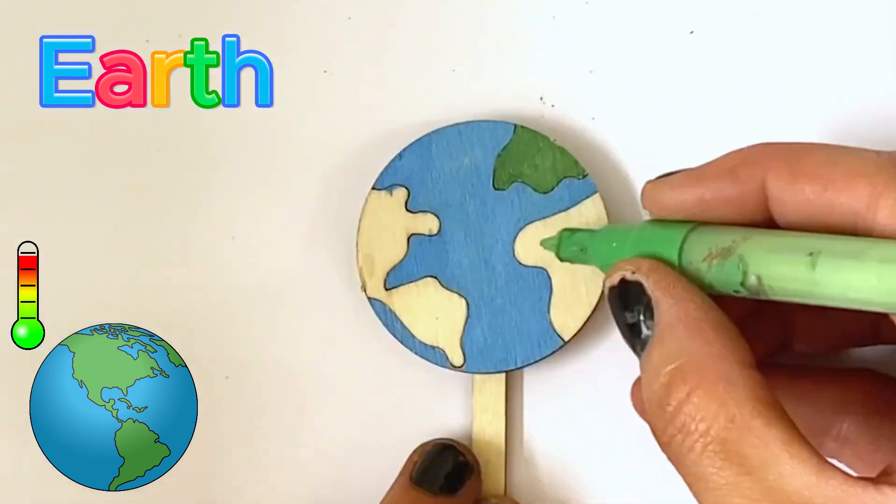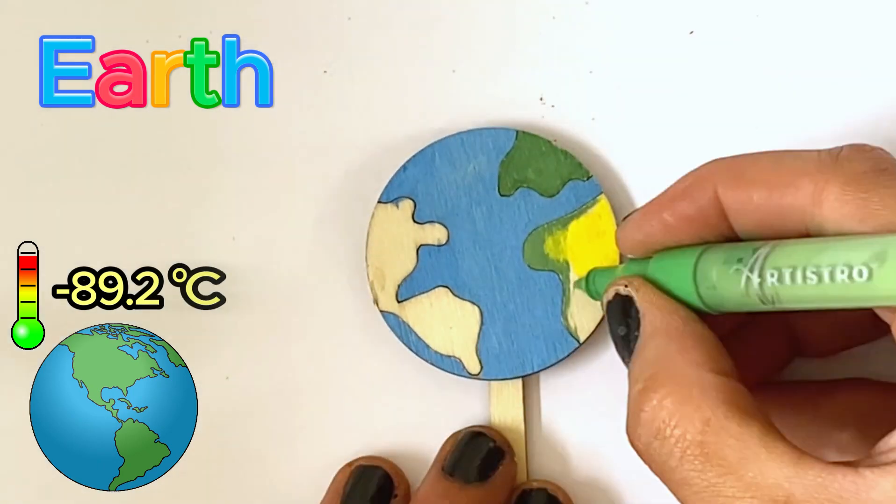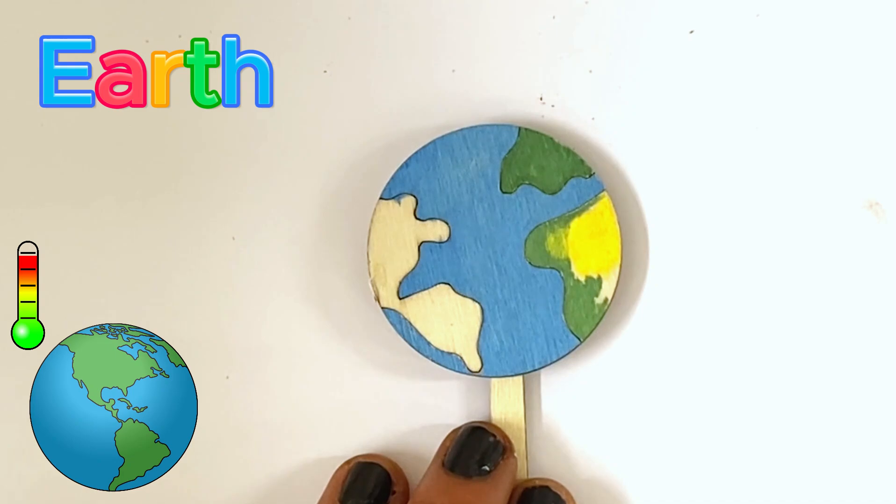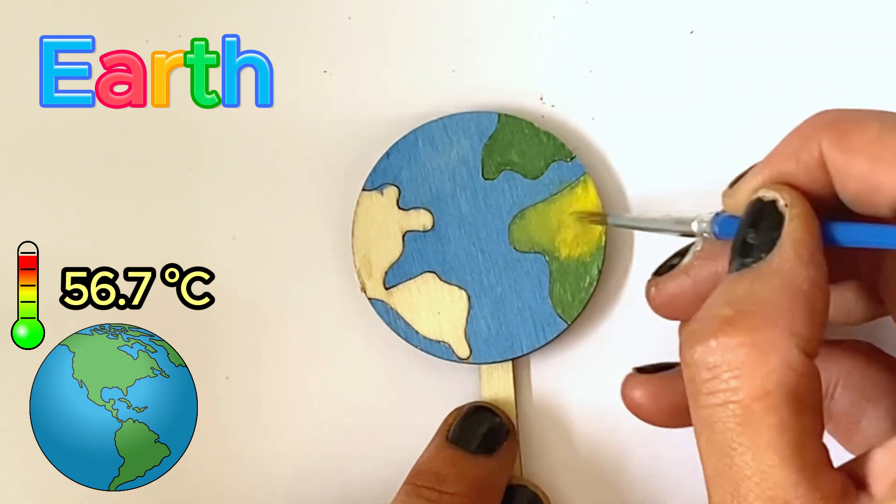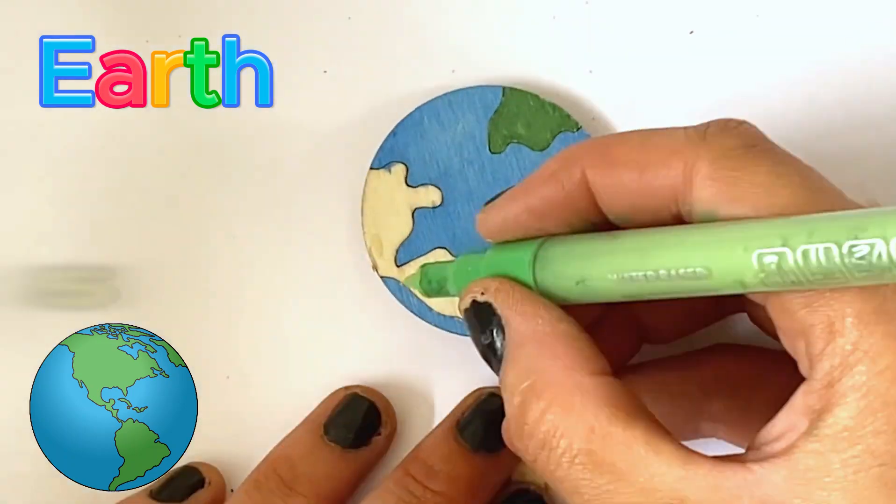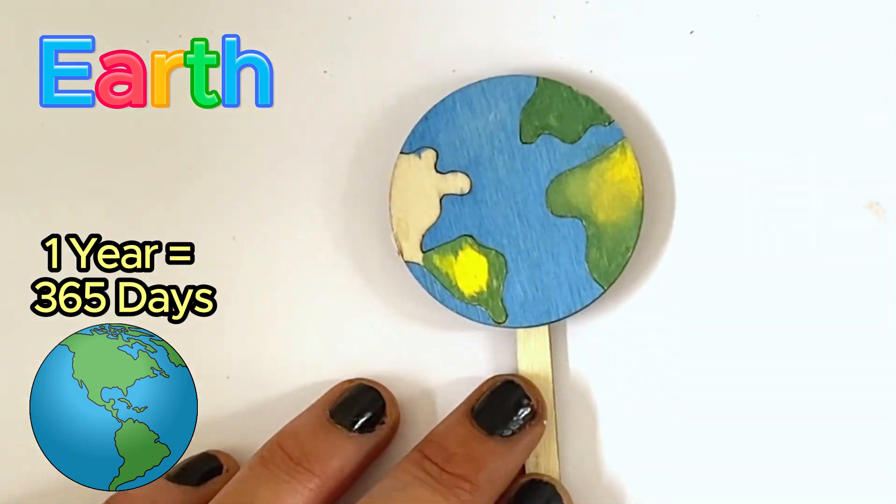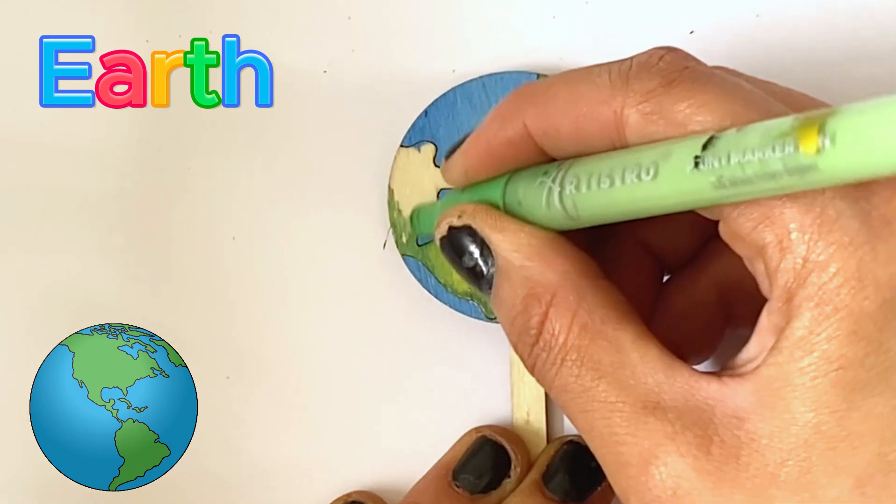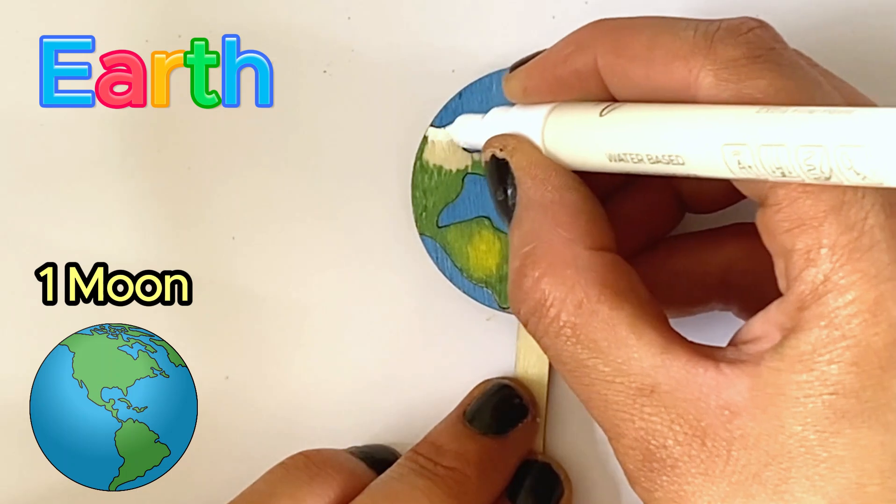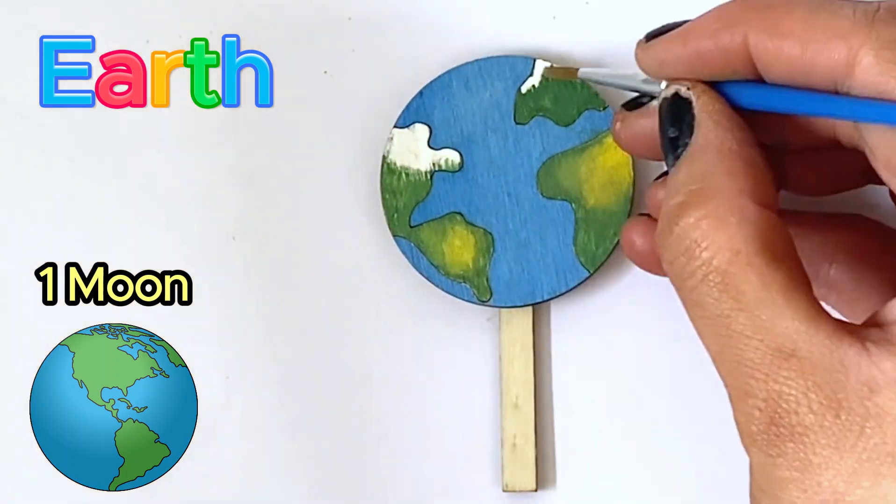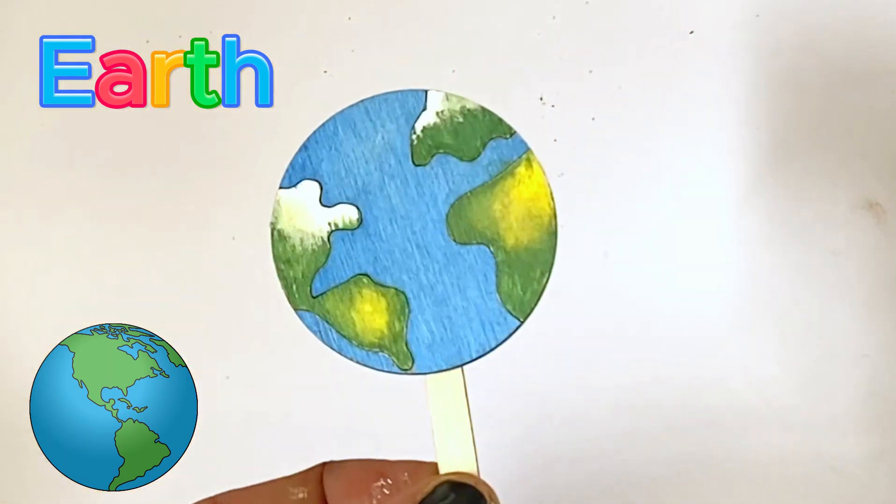However, the coldest temperature ever recorded on Earth was minus 89.2 Celsius in Antarctica. And the hottest recorded temperature was 56.7 Celsius in California, in the United States of America. It takes the Earth 365 days to orbit our Sun, which we call one year. And one day on Earth is 24 hours. Earth has one official moon. And it's Earth's sole natural satellite and nearest large celestial body. And here is our finished Earth.